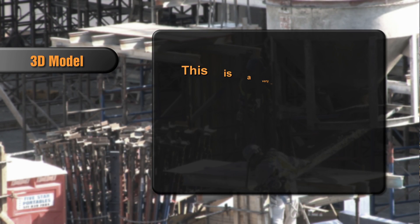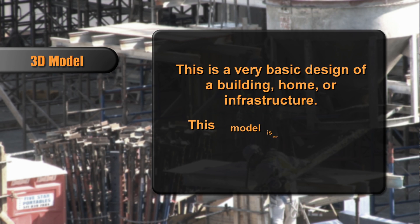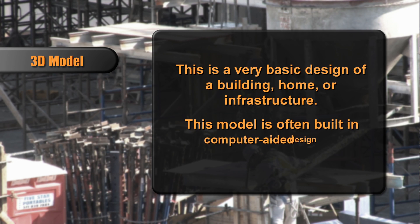So let's break it down even further. Let's walk through 2D, 3D, 4D, 5D, and even 6D BIM. 2D is the old way of doing things — hand sketches on paper. Moving into the digital world, 3D is the model. This is the very basic design of a building, a home, or an infrastructure. The model is often built in a computer-aided design software, which is the way we have defined many times in Construct Tech magazine or even here on Construct Tech TV.